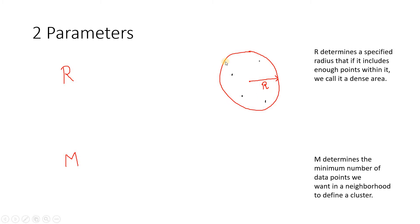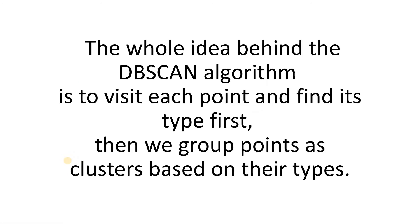The parameter m determines the number of data points we want in the neighborhood to define a cluster. We need to define how many data points we are considering, because the central idea is that if a point belongs to one cluster, it will be near to many other data points in that same cluster. We need to select these two parameters wisely. The whole idea behind DBSCAN is to visit each point and find its type. There are three types: core point, border point, and noise or outlier. We then group points as clusters based on their types.